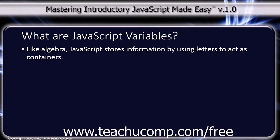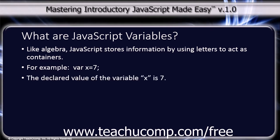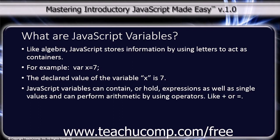Much like algebra, JavaScript uses letters as containers for storing information. For example, var x = 7; In this example, the letter x is assigned a numerical value of 7, declaring that any variable with the letter x will have a value of 7.